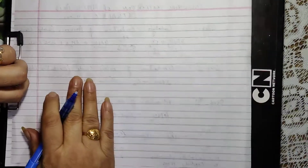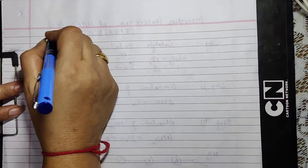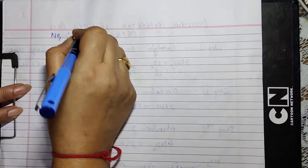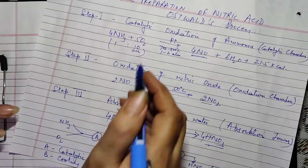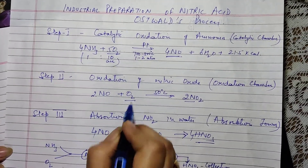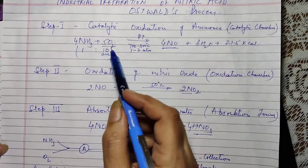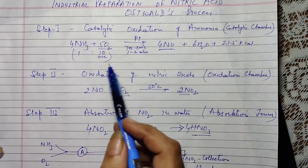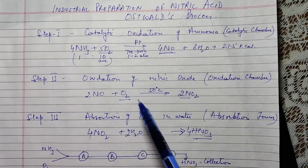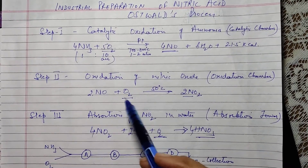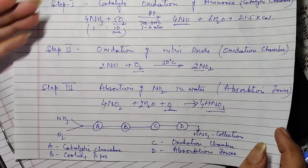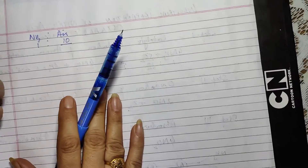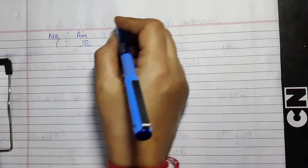The ratio in which ammonia and air are taken is 1 to 10. There are two main reasons for using air instead of pure oxygen. First, separating oxygen from air adds to the cost. Second, oxygen is used in all three steps — in the first, second, and third steps. Whatever oxygen is utilized in step one, the remaining oxygen is used in steps two and three, and excess oxygen does not interfere with the process.